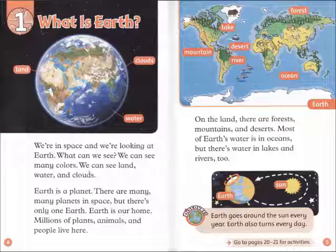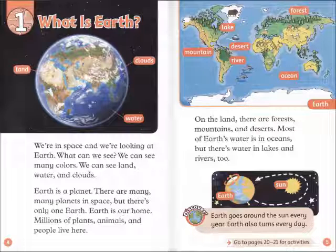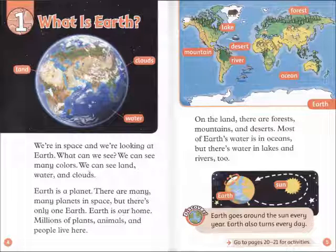Chapter 1: What is Earth? We're in space and we're looking at Earth. What can we see? We can see many colors. We can see land, water, and clouds. Earth is a planet. There are many, many planets in space, but there's only one Earth. Earth is our home.